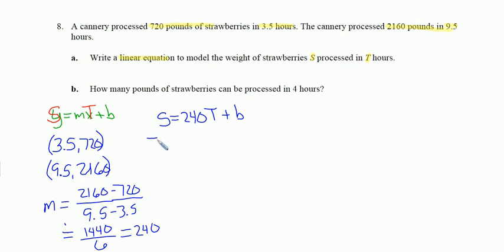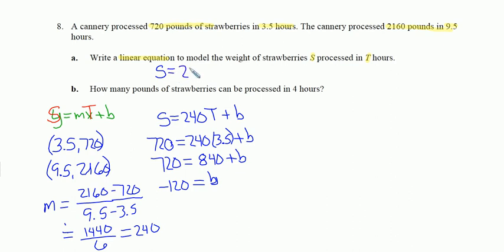So I have S pounds of strawberries equals 240 times the number of hours T, plus some unknown value B. Let's plug in 3.5 and 720. So 720 pounds equals 240 times 3.5 plus B. 240 times 3.5 is 840. 720 equals 840 plus B. Subtract 840 from both sides, we get negative 120. That's my B value. So my answer for part A is S equals 240T minus 120.